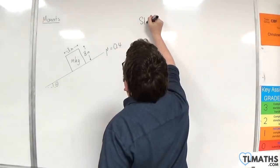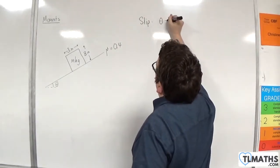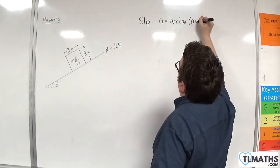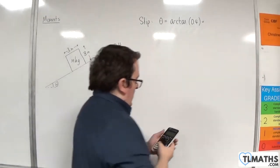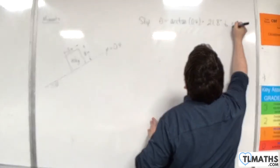So for slipping, the angle theta will be arctan of the coefficient of friction, so 0.4, and that's 21.8 degrees to 3 sig fig.